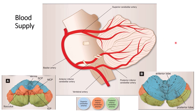This is the blood supply of the cerebellum. There are three different arteries supplying the cerebellum. First, you need to understand that the two vertebral arteries, one on each side, combine to form the basilar artery. From these arteries arise three vessels on each side: the posterior inferior cerebellar artery, the anterior inferior cerebellar artery, and the superior cerebellar artery. The superior cerebellar artery supplies the anterior lobe.